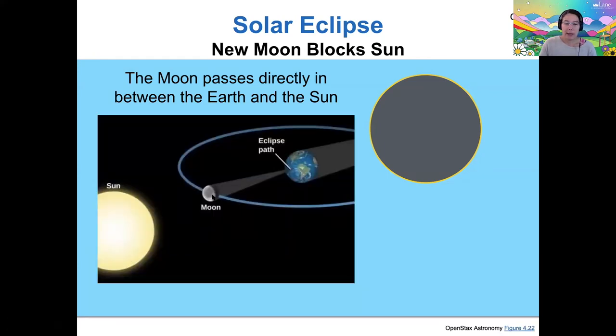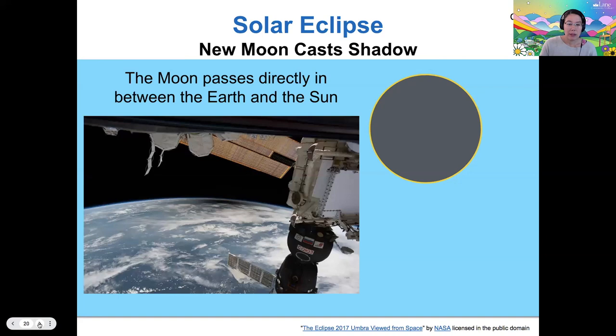It therefore casts a shadow on the earth. And the eclipse path is what we call the region on earth where that shadow moves as the earth rotates. So multiple observers on earth can see a solar eclipse when there is a total solar eclipse, but not all of them see the full total solar eclipse.